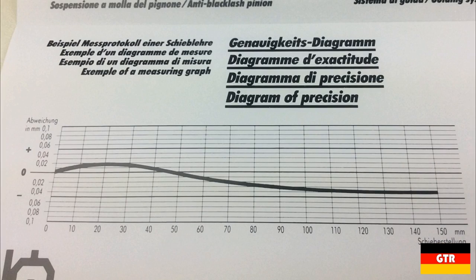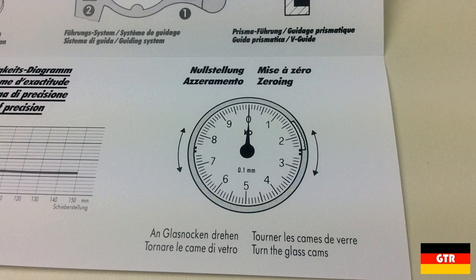It doesn't look like this unit is serialized, so you wouldn't get a calibration curve for each unit. The unit claims to be within 0.1 millimeters across the entire 150 millimeter range. Finally there are instructions on how to zero the unit, which is done by turning the cams on the dial cover.